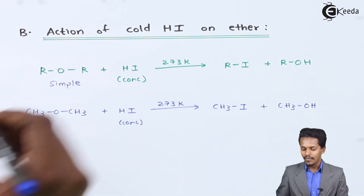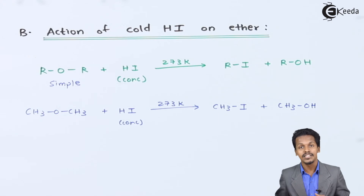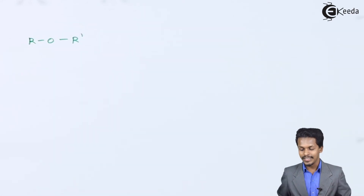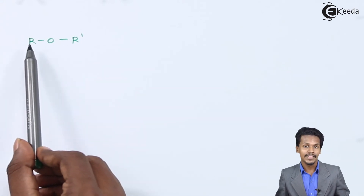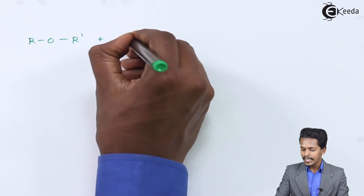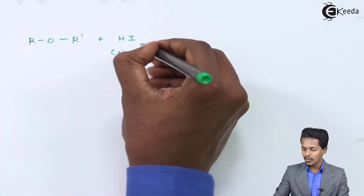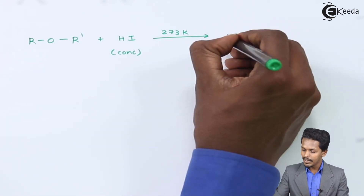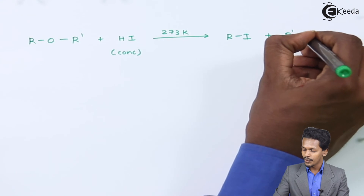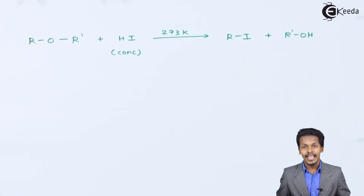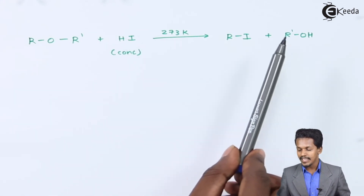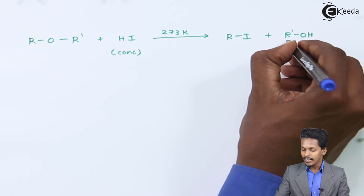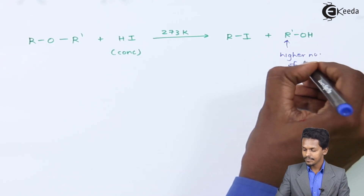For a mixed ether ROR', where R' has more carbon atoms than R, treated with concentrated cold HI at 273 Kelvin, the product is RI plus R'OH — an alkyl iodide and an alcohol. The alcohol produced has a higher number of carbon atoms compared to the alkyl iodide, because the smaller alkyl group R is converted to the iodide.